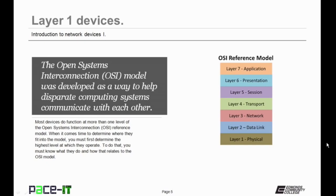It was developed as a way to help disparate computing systems to communicate with each other. The OSI reference model has seven layers. Layer 1 is the Physical Layer, Layer 2 is Data Link, Layer 3 is Network, Layer 4 is Transport, Layer 5 is Session, Layer 6 is Presentation, and Layer 7 is Application.